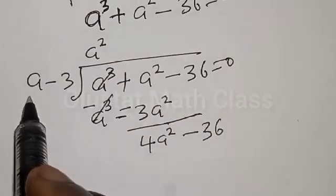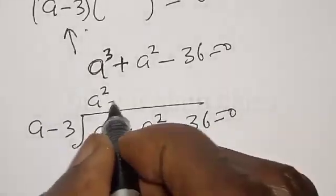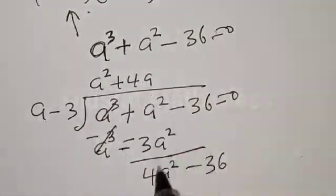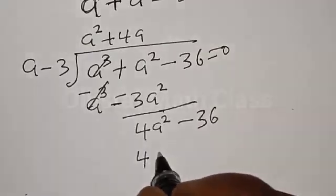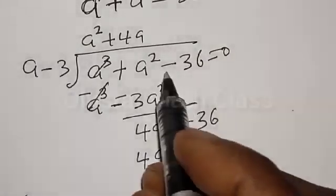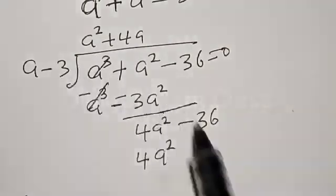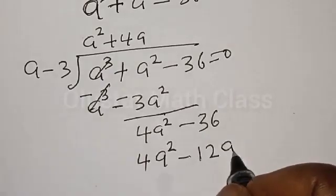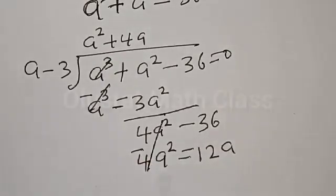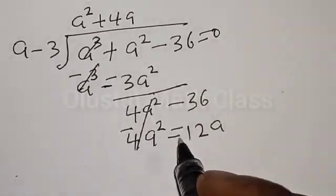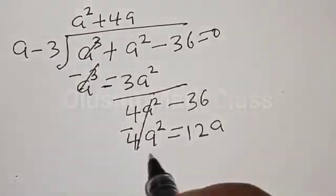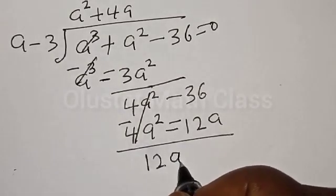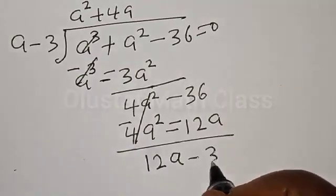Again, a divided into 4a squared gives plus 4a. Then 4a times a gives 4a squared, and 4a times minus 3 gives minus 12a. Multiplying by negative, this cancels. Then here we have plus 12a minus 36. Bringing it down, we have 12a minus 36.